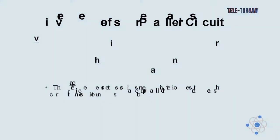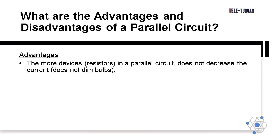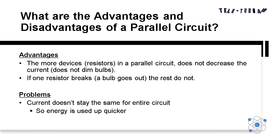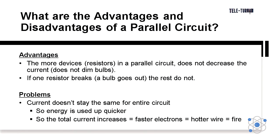What are the advantages and disadvantages of a parallel circuit? Advantages: The more devices in a parallel circuit does not decrease the current. If one resistor breaks, the rest do not.